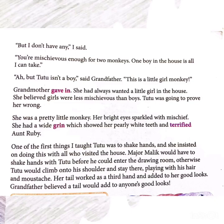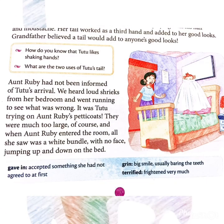But before Major Malik could even enter the drawing room, Tutu had already started climbing onto his shoulder and stayed there playing with his hair and mustache. Tutu's tail worked as a third hand, adding to her good looks. Grandfather believed a tail could add to anyone's good looks. Aunt Ruby had not been informed of Tutu's arrival and didn't know there was another pet in the house.